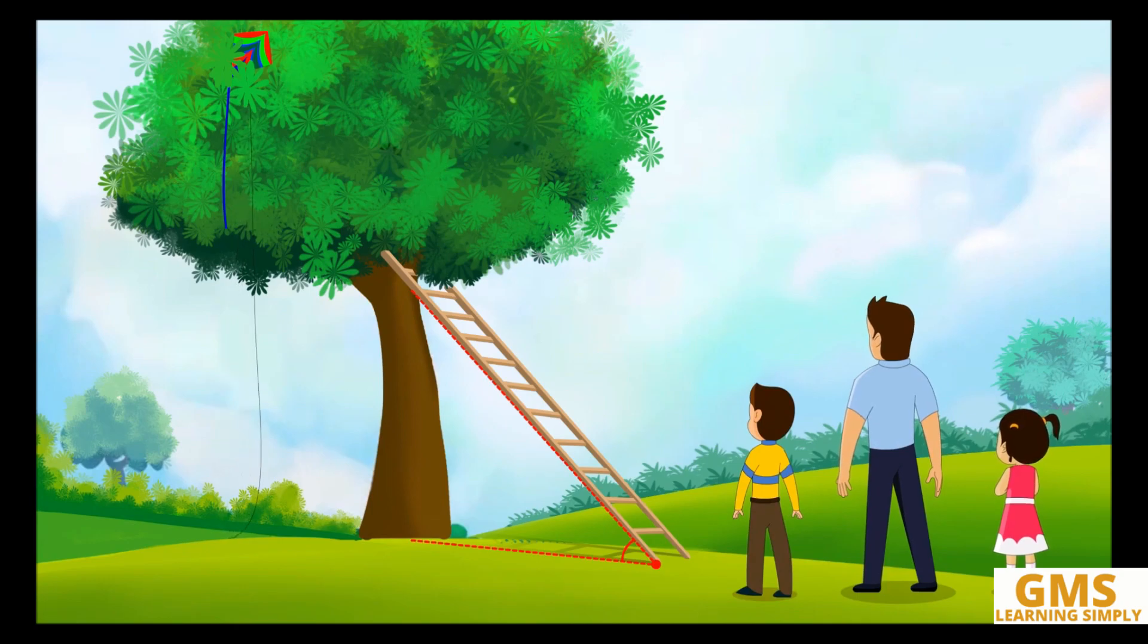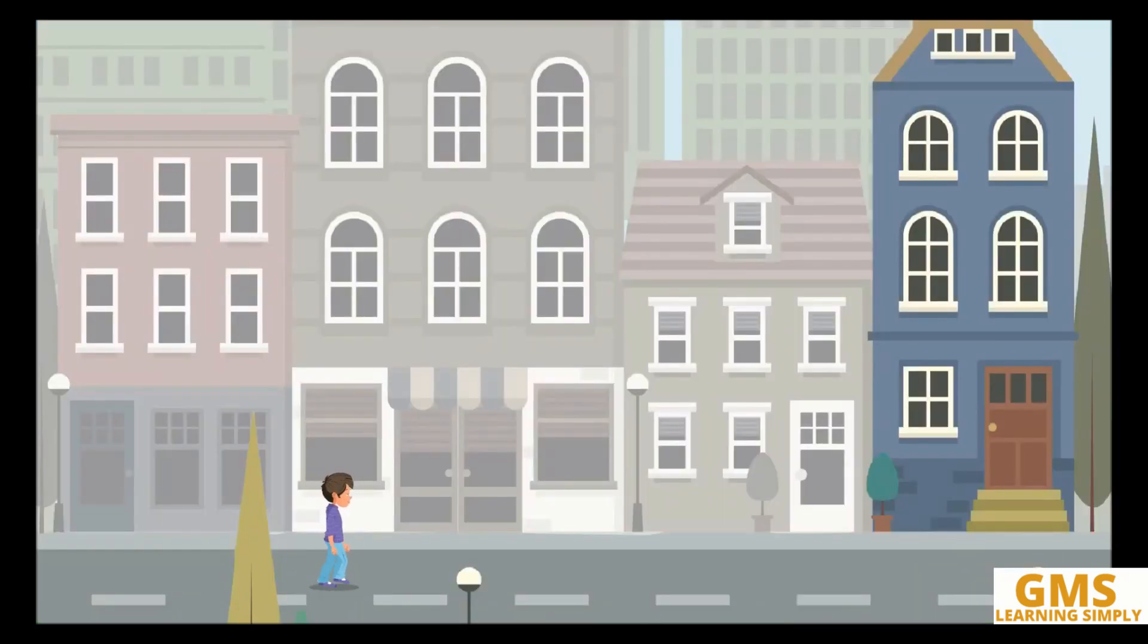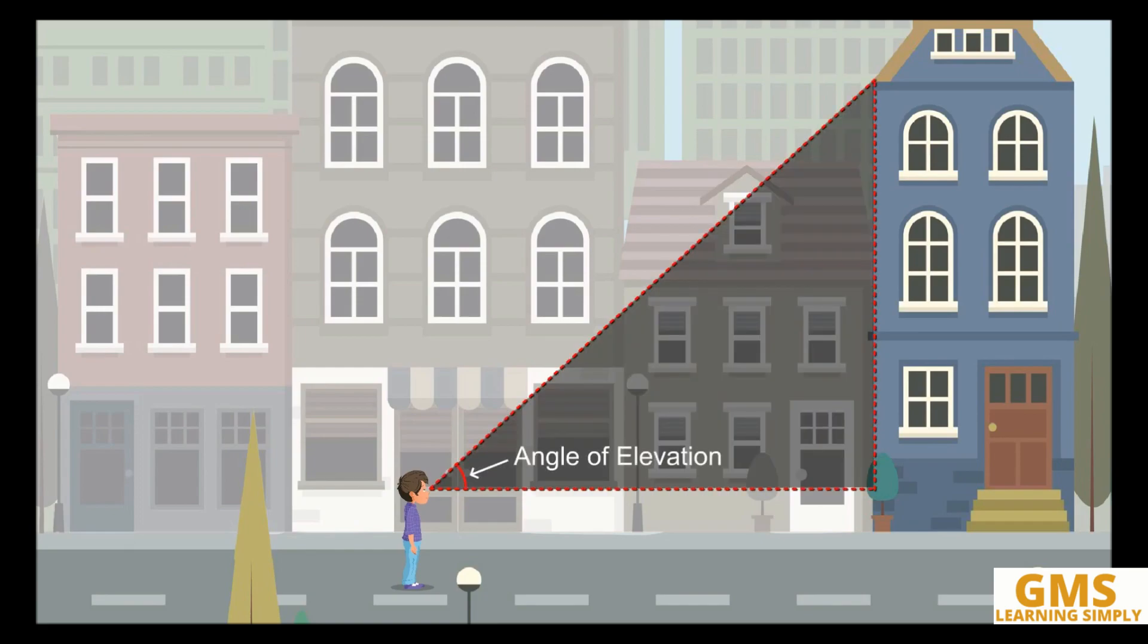Let us see some more situations where there is an angle of elevation. A boy walking on the road, he looks at the top of a building. The top of the building forms an angle of elevation with the eye of an observer. The line between the point and building top is called the line of sight.